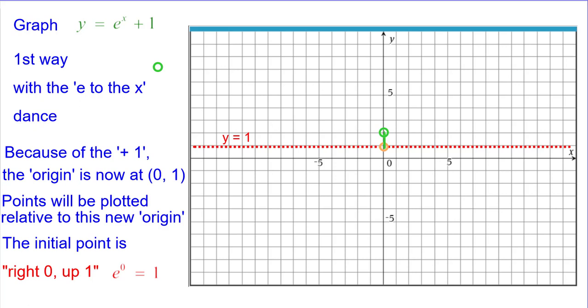This point is right 0 up 1 because e to the 0 power is 1. Right 1 up 2.7 because e is approximately 2.7. Right 2 up 7.4, e squared is approximately 7.4.